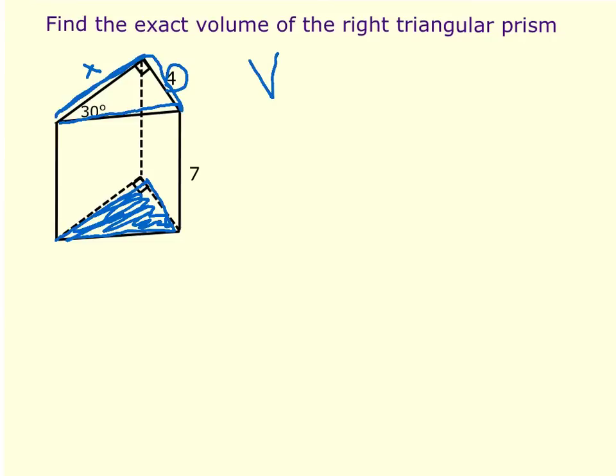So volume is equal to area of the base times the height of the prism. In this case, the base is a triangle, so we have to do 1 half times base times height, times the height of the prism. I can see that 7 is the height of the prism. I'm going to call 4 the base of the triangle. So I need to find x.